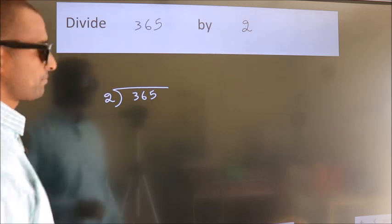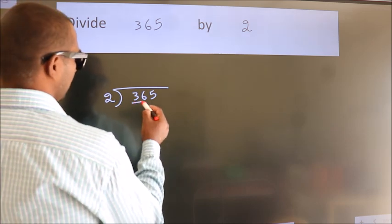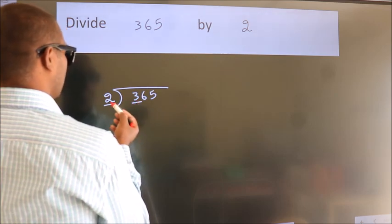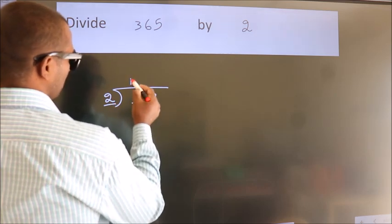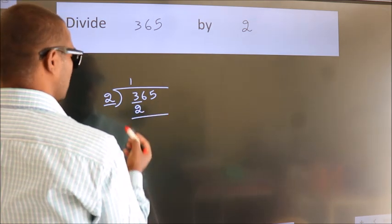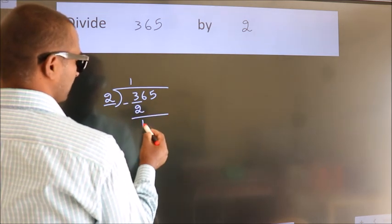Next, here we have 3, here 2. A number close to 3 in 2 table is 2 1s 2. Now we should subtract. We get 1.